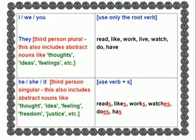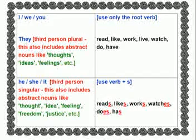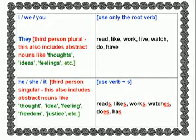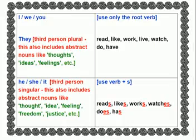With he, she, it — that is third-person singular — we use verb+S. Third-person singular can also include abstract nouns like thought, idea, feeling, freedom, and justice.